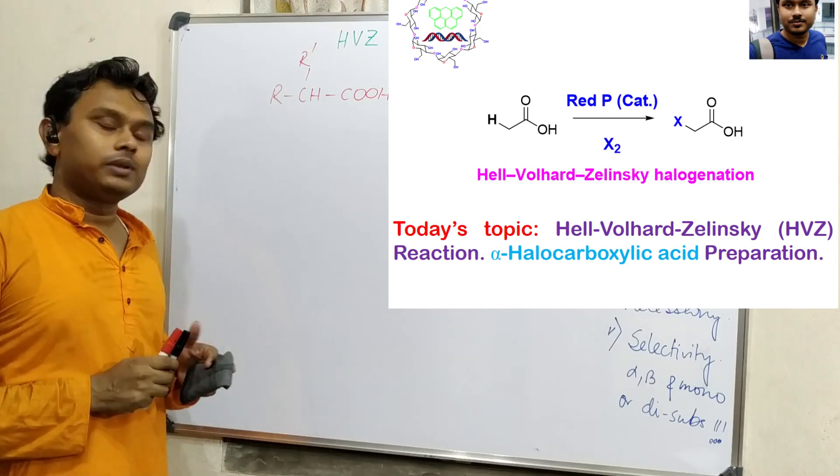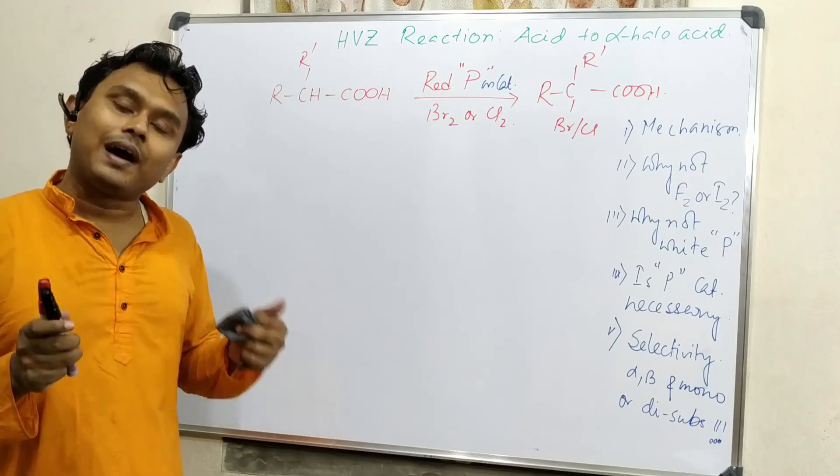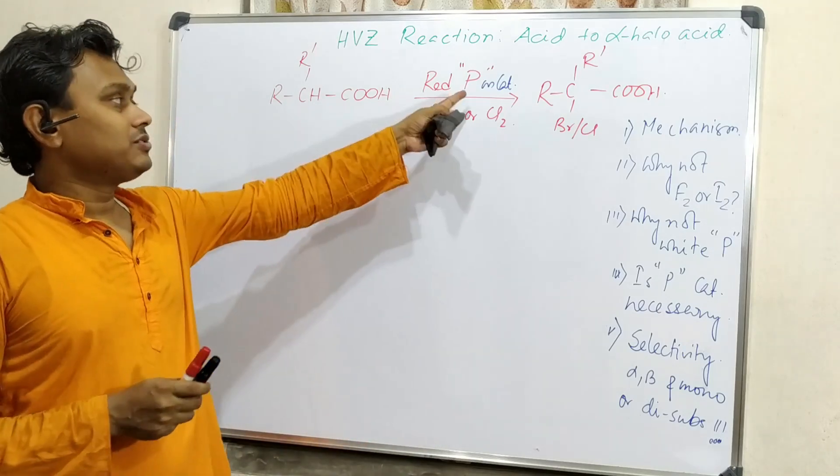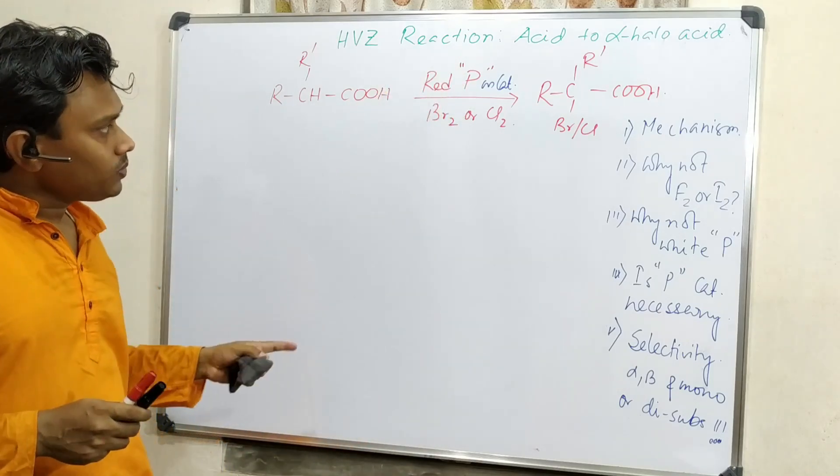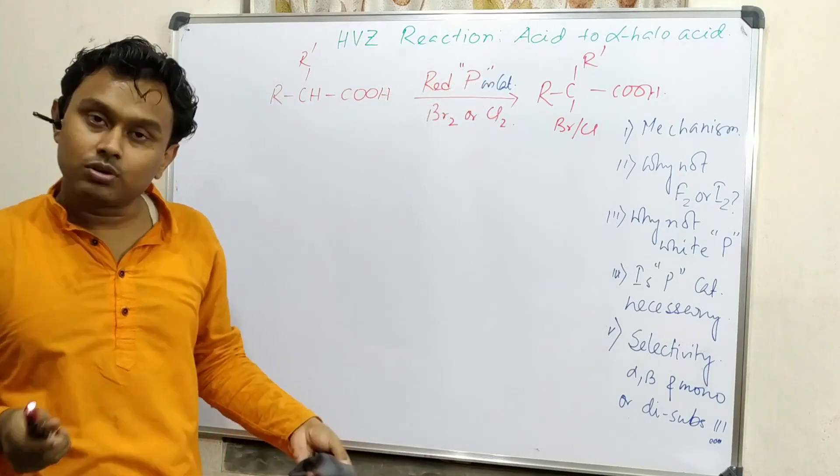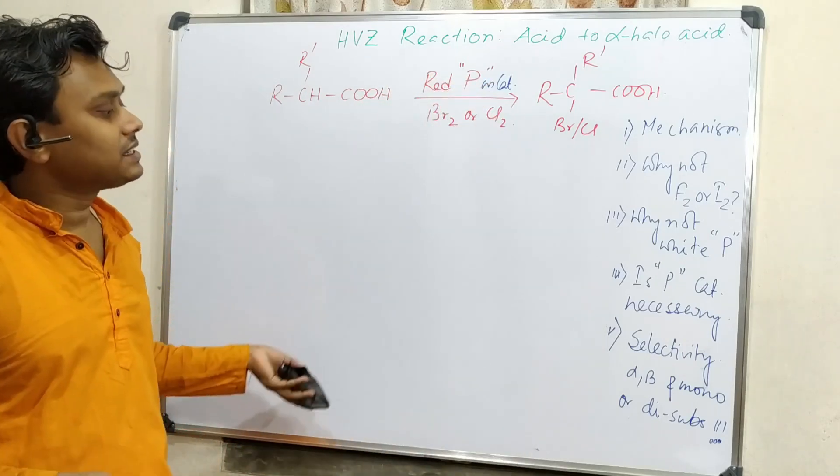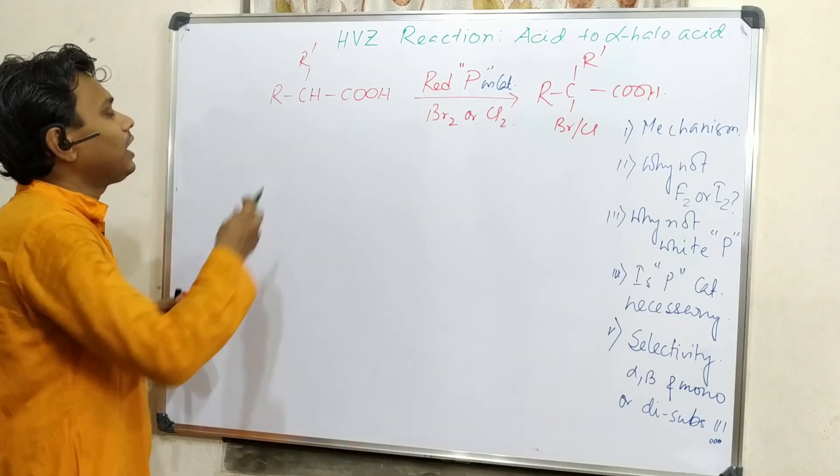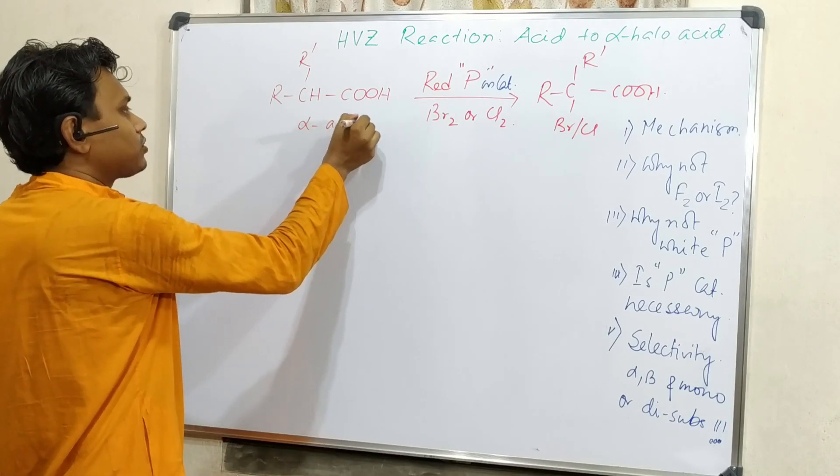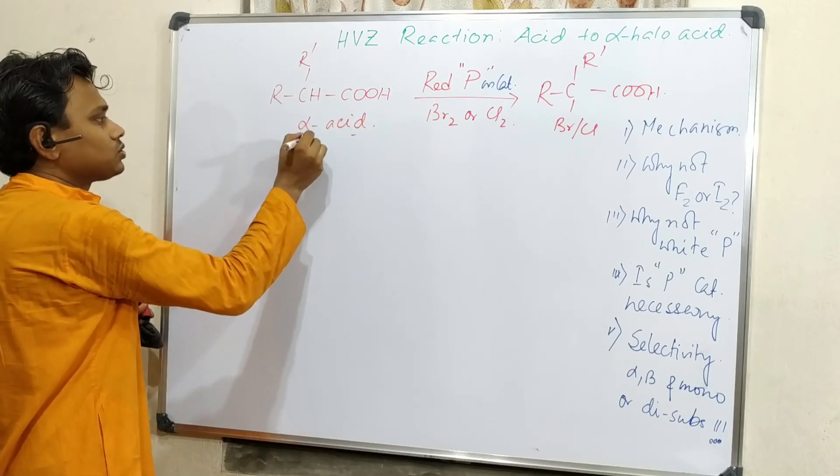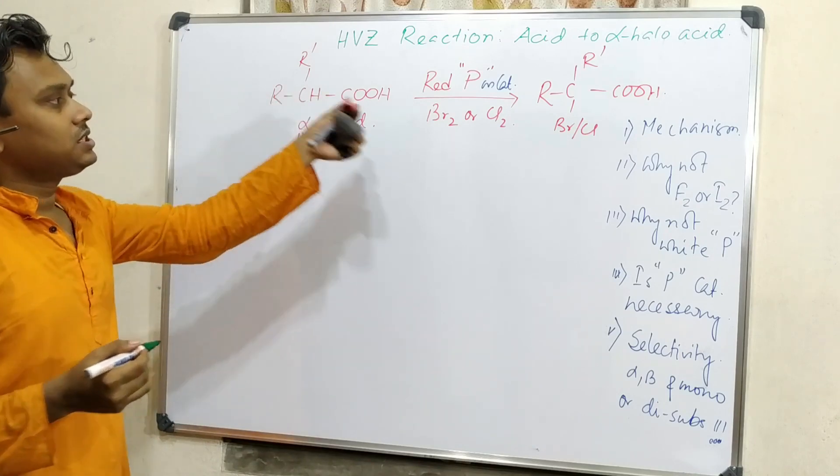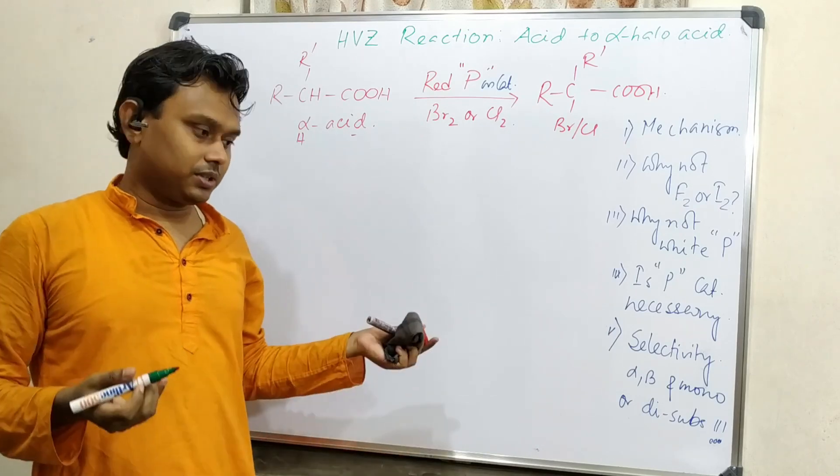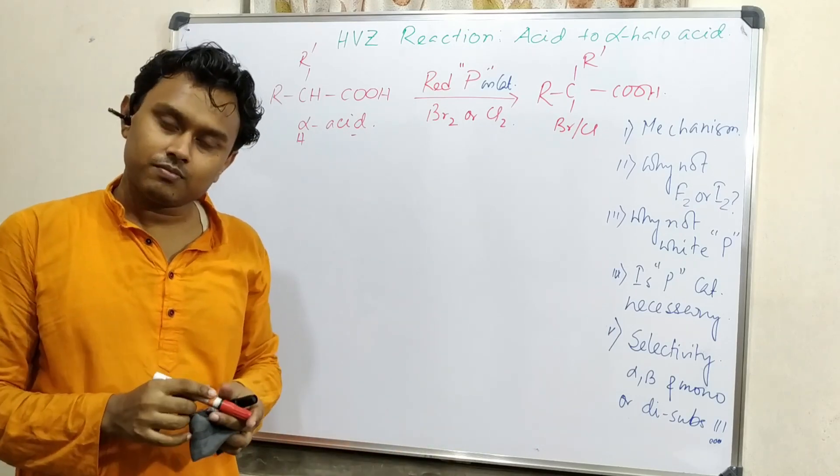Today we will explain about first the mechanism, second why fluorine and iodine could not be used as reagents, why we are using red phosphorus, is it necessary to use a catalyst and can we avoid this use of catalyst, and finally selectivity. We are saying alpha position means alpha hydrogen containing acid. So selectivity is at alpha position or what? So a lot of things to be learned during this discussion.